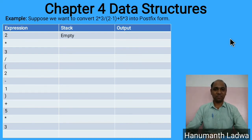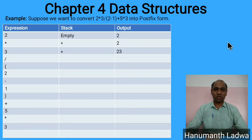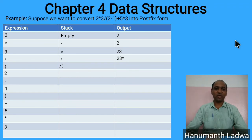Initially the stack is empty. The first token is operand 2, so we output it: output = '2'. Next is the * operator; stack is empty, so we push it: stack = [*]. Next token is operand 3, output it: output = '2 3'. Now we encounter the / operator. Since / has equal priority to *, we pop * and output it, then push /: stack = [/], output = '2 3 *'.